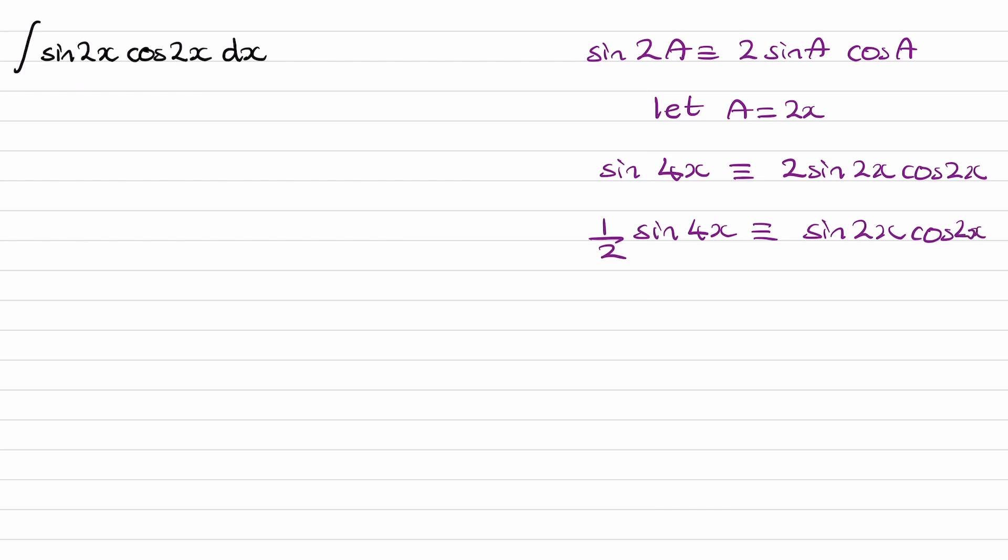So then our integral will become a half of sine 4x. And now we can integrate this. Cos 4x will differentiate to make sine 4x, so we know that our solution will be of the form of cos 4x. But we need to think about what constant we need in front so that when this differentiates, we will end up with a half coming out.